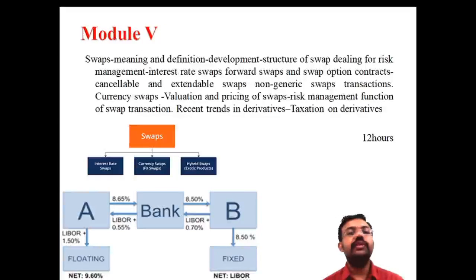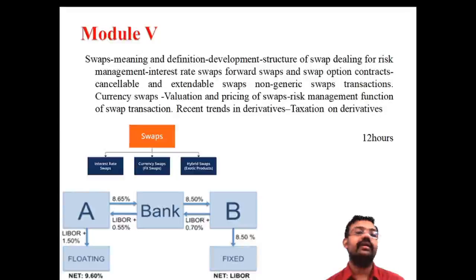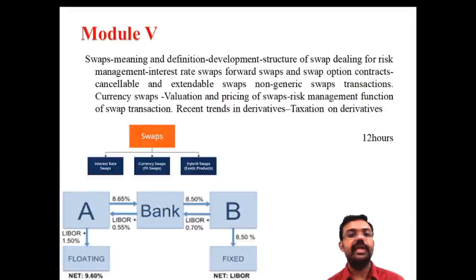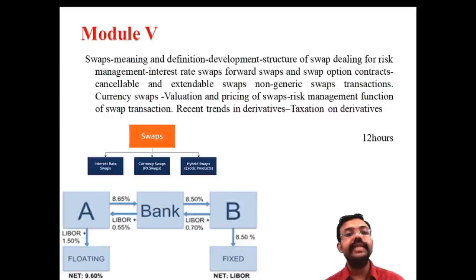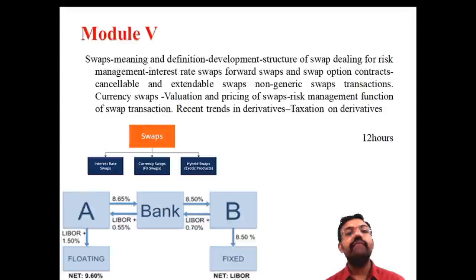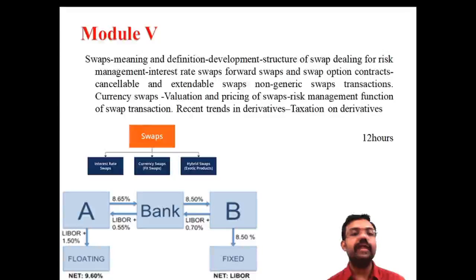The fifth module is the last module. This is the swap market. Swap means it is like an exchange — exchanging the cash inflow between persons. Swap is a part of the derivative. In the fifth module we discuss what is meant by a swap.